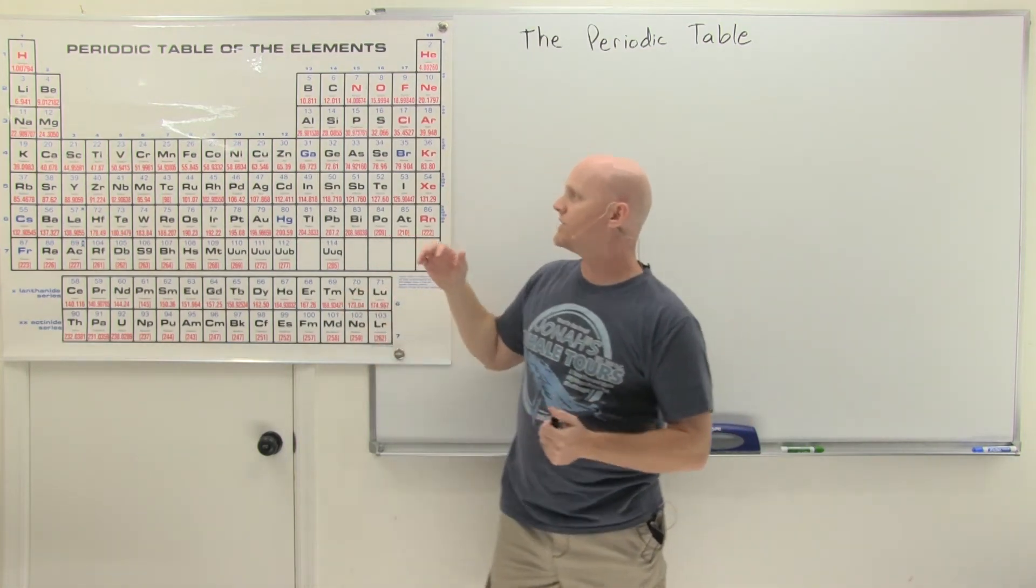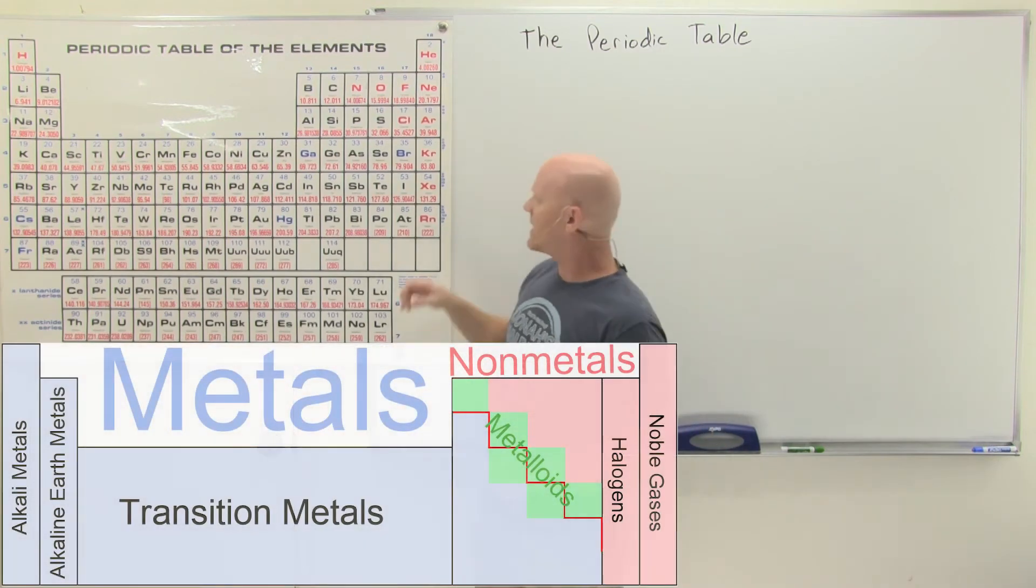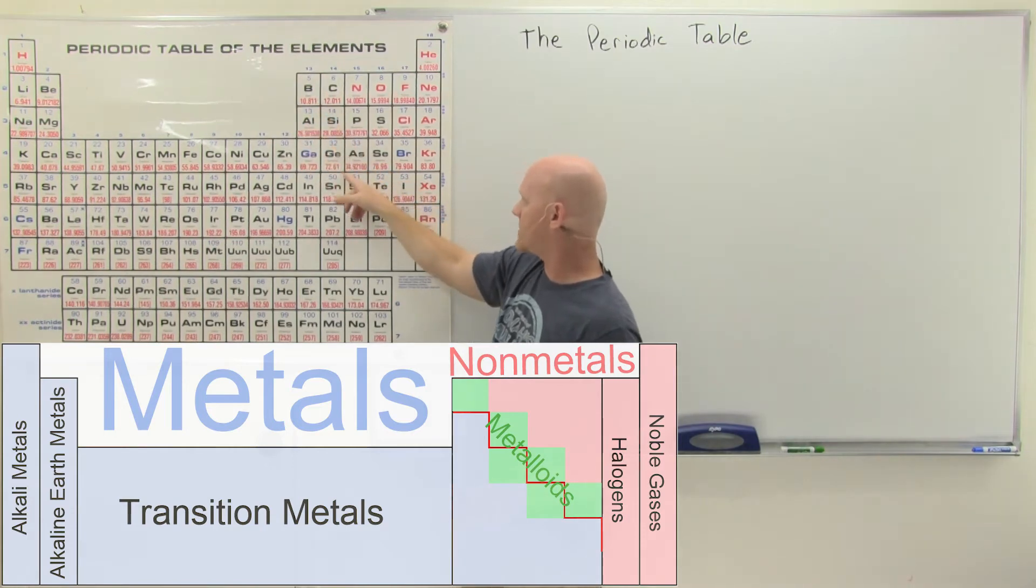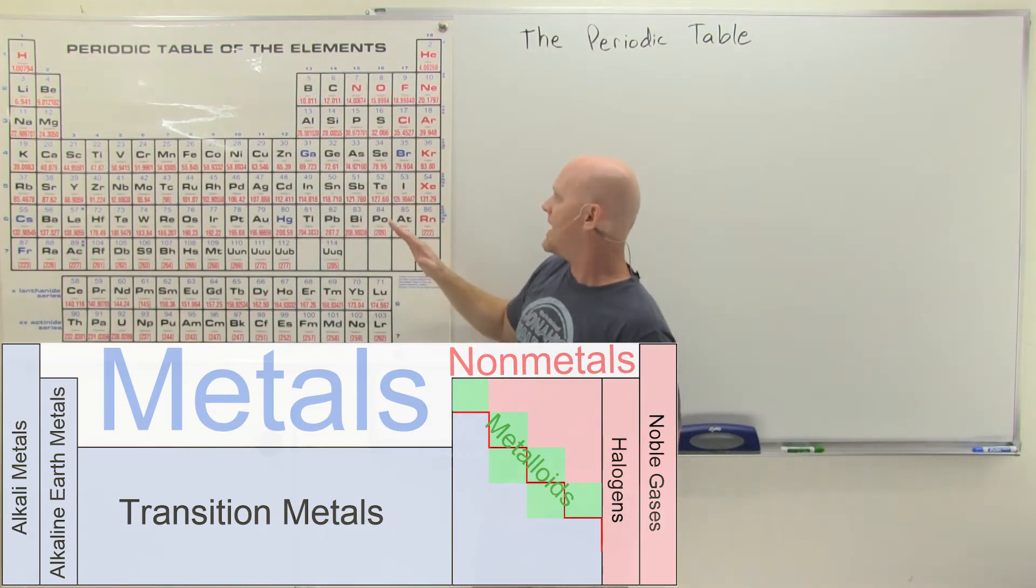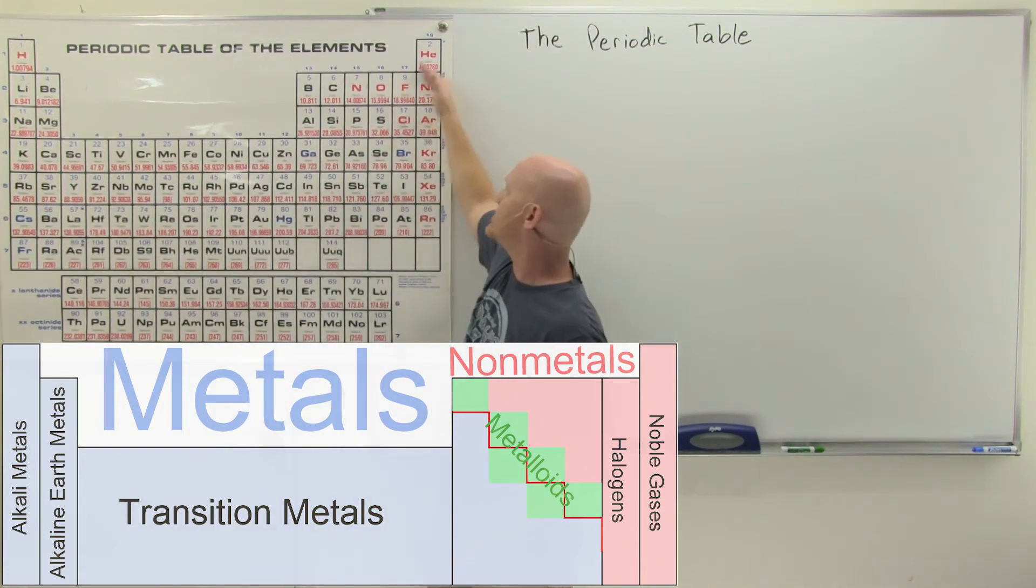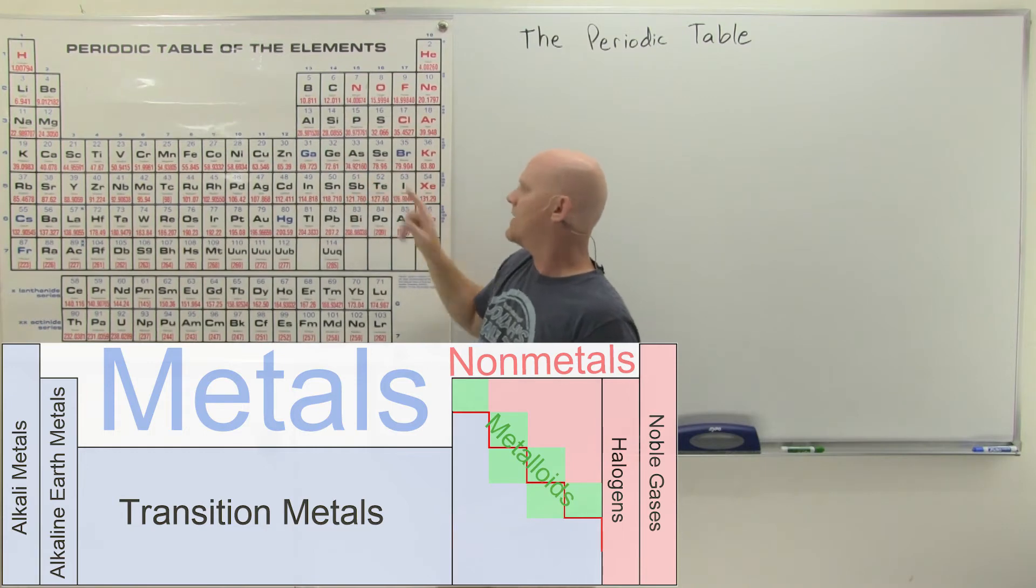All right, some of these groups you definitely need to know, and some of the divisions here. And so the one I gave you on your handout kind of shows you a couple different versions, that there's really like a red staircase that runs through a lot of periodic tables right here. And it separates the metals from the non-metals. And then a handful right along the staircase here are what we call metalloids. And they're kind of like have properties of both metals and non-metals.